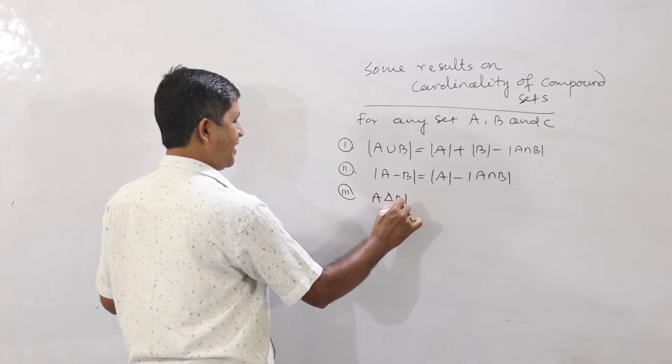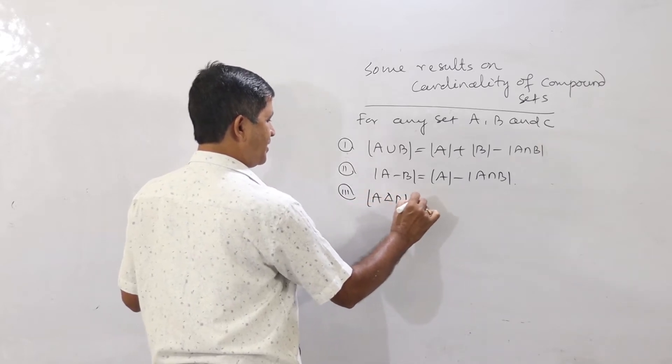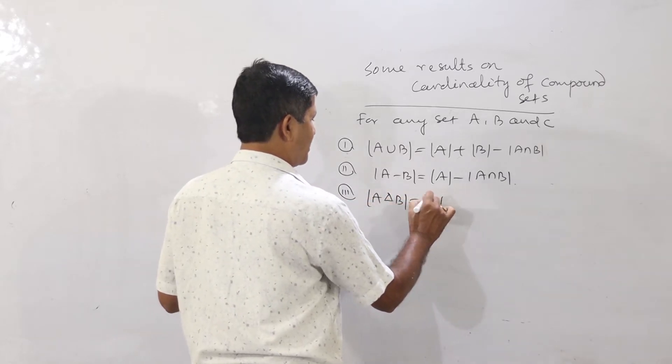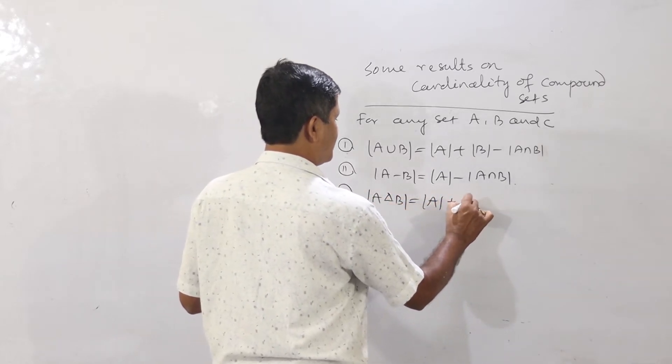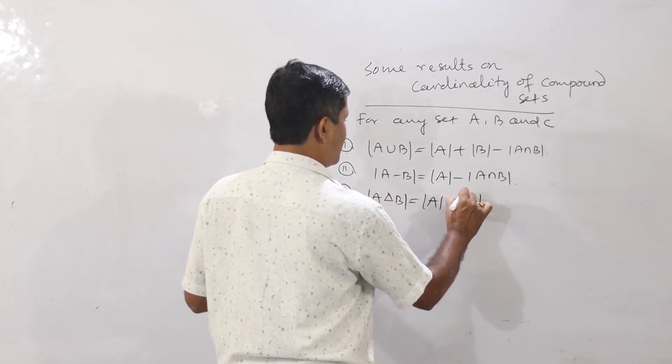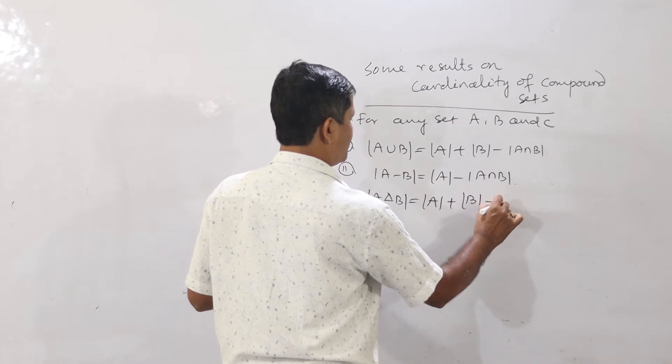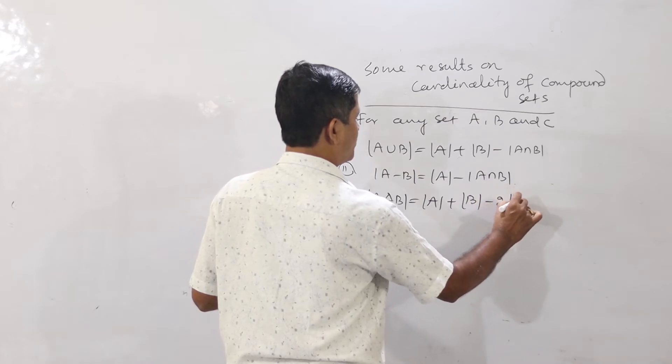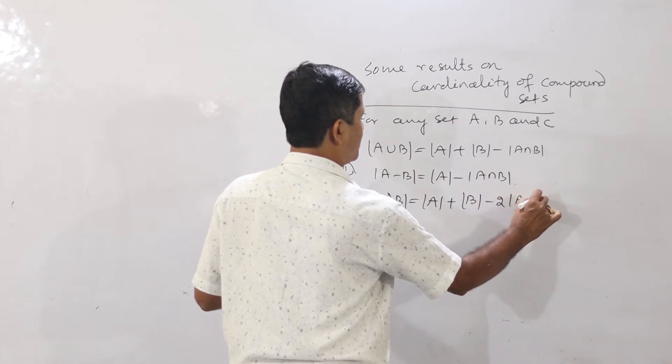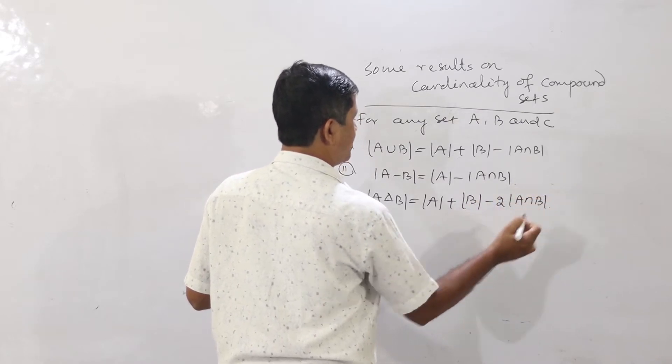Third result: the cardinality of A symmetric difference B equals cardinality of A plus cardinality of B minus 2 times cardinality of A intersection B.